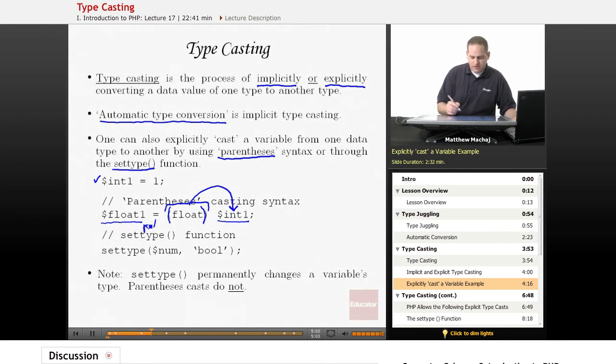Settype does a similar thing, except the way settype works is it's a function that has two arguments, which we're going to learn more about when we learn more about functions. But for right now, you can just know that basically you write settype and then a pair of open and close parentheses, and then you pass it two pieces of data. You pass it the variable you want to cast, in this case, $num, and then you pass in a string that says what you want to cast it to. So what this operation is going to do is cast the variable $num, which maybe is an integer, to a boolean. So it's going to change it from a number data type, like an integer data type, to a boolean data type.